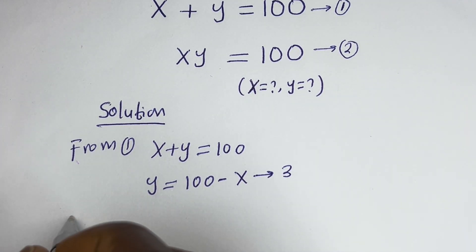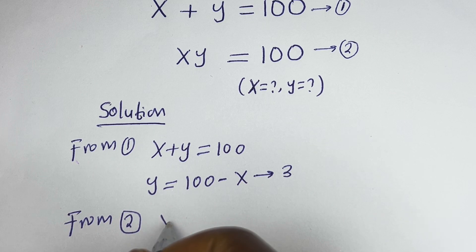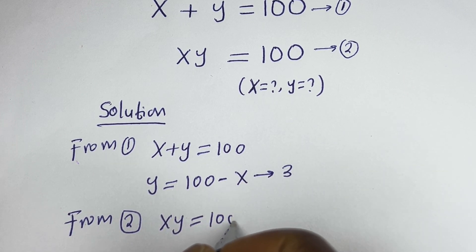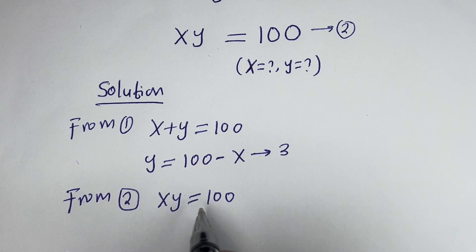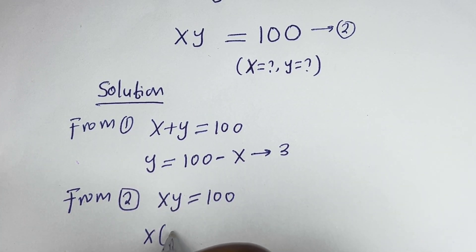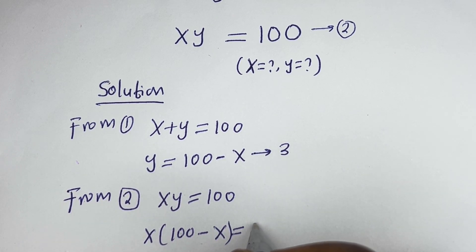From equation 2, x times y is equal to 100. We can substitute for y here. We have x times (100 minus x) is equal to 100.